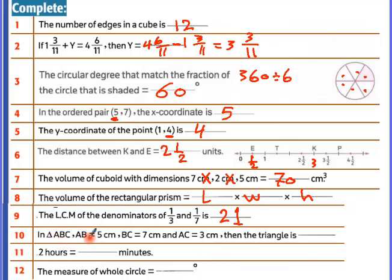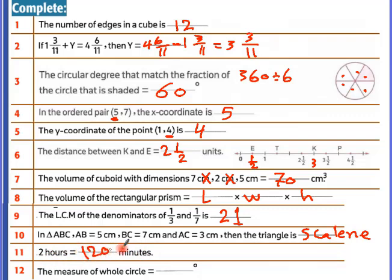In triangle ABC: AB equals 5, BC equals 7, AC equals 3 — all three sides are different, so the triangle is scalene. Two hours equals 120 minutes since one hour equals 60 minutes.